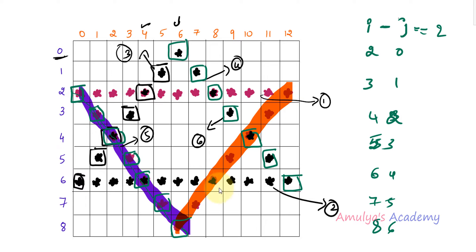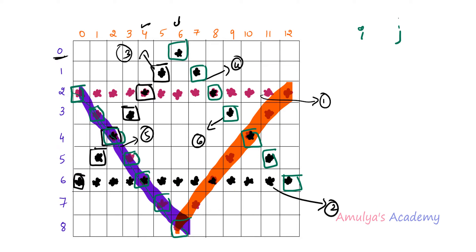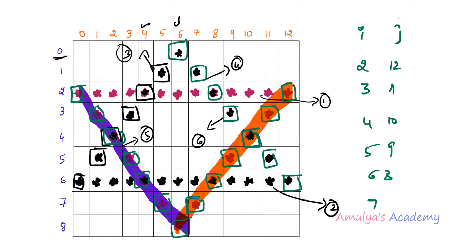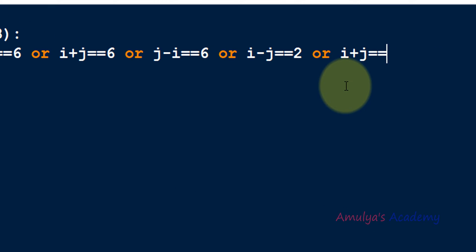For the last part, the positions are: row 2 column 12, row 3 column 11, row 4 column 10, row 5 column 9, row 6 column 8, row 7 column 7, row 8 column 6. Adding i + j gives 14 in every case: 2+12=14, 3+11=14, and so on. So the condition is i + j == 14. If any one of all these conditions is true, I want to print a star.